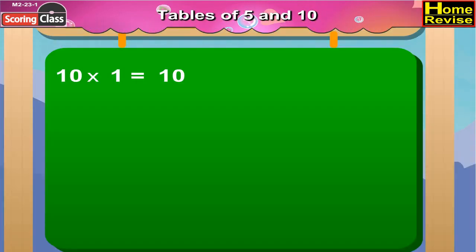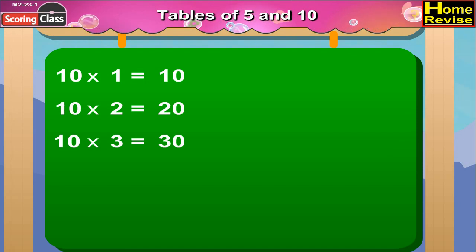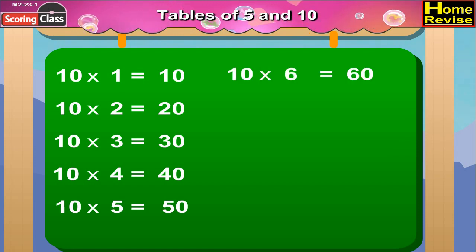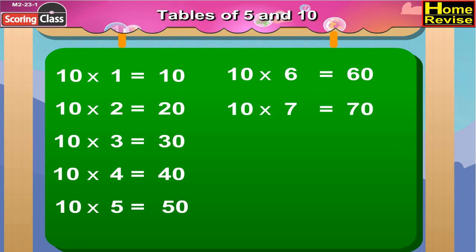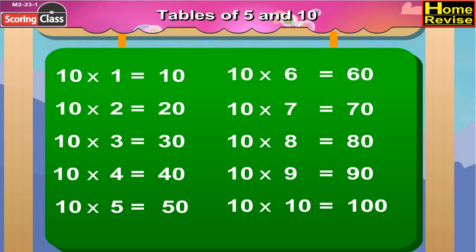The ten times table: ten ones are ten, ten twos are twenty, ten threes are thirty, ten fours are forty, ten fives are fifty, ten sixes are sixty, ten sevens are seventy, ten eights are eighty, ten nines are ninety, ten tens are one hundred.